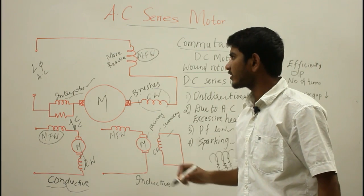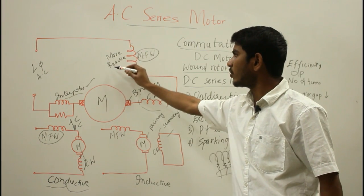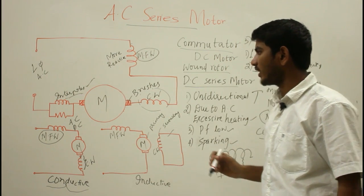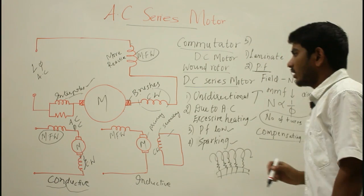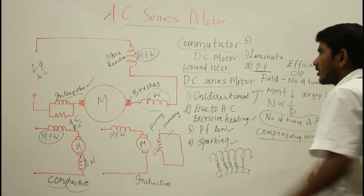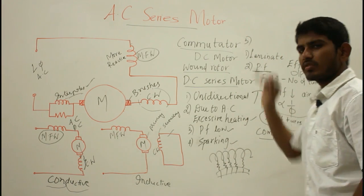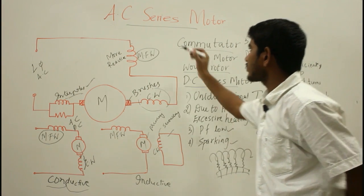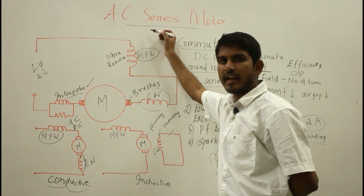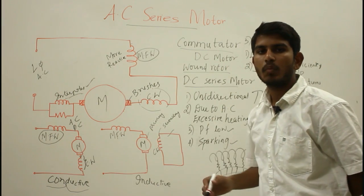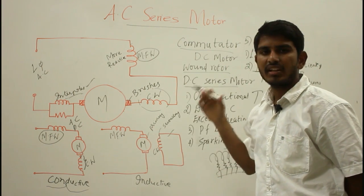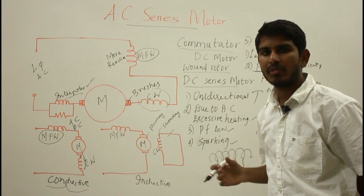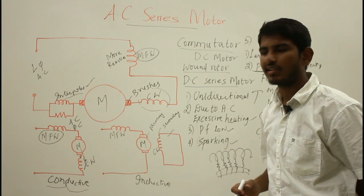By having more reactive voltage drop in the main field winding, we can improve the power factor of the AC series motor. The applications of AC series motors include hair dryers, portable drills, table fans, and many kitchen appliances.